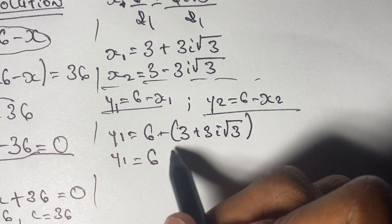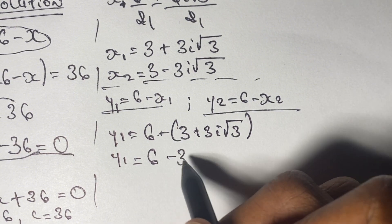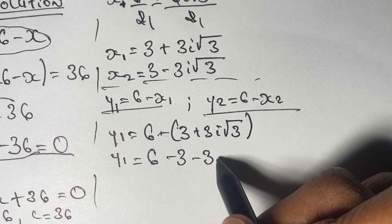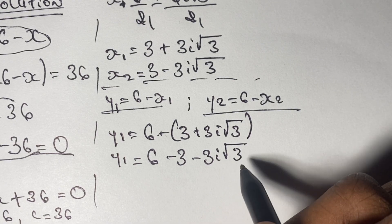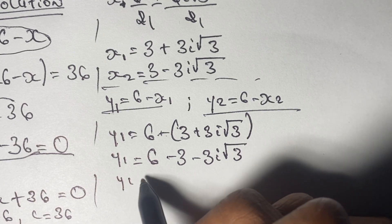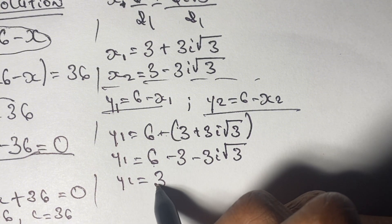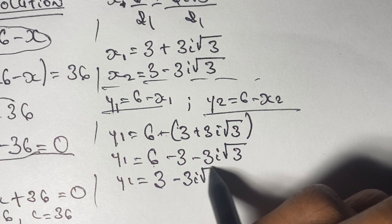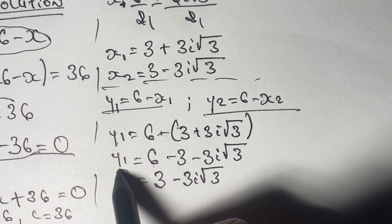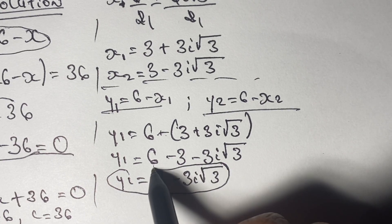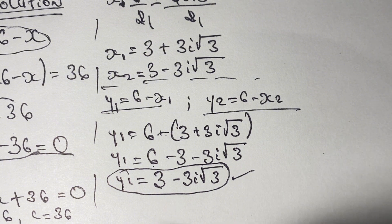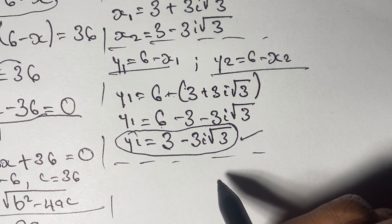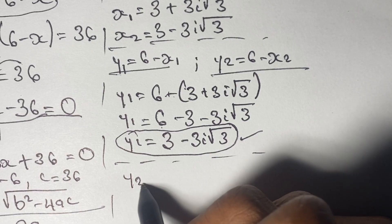So y is equal to 6, and negative 1 times 3 is going to be negative 3, and we have minus 3i√3. So 6 minus 3 gives us 3, and we have minus 3i√3. So the first solution of y is y₁ = 3 minus 3i√3. We'll now look at the second solution.